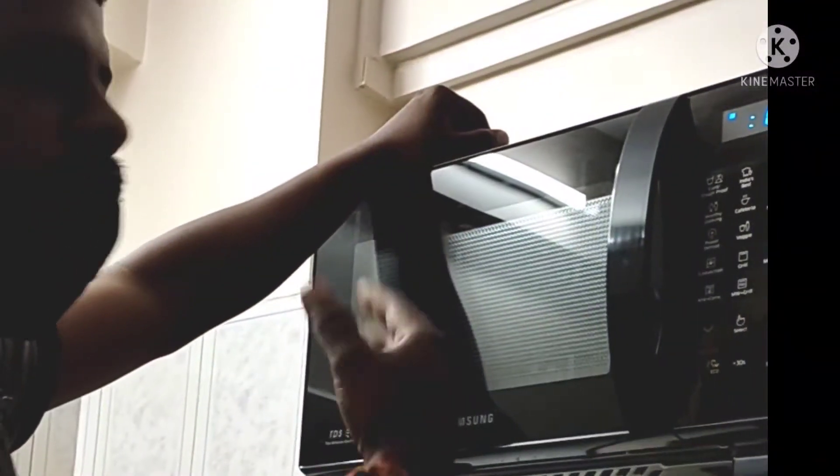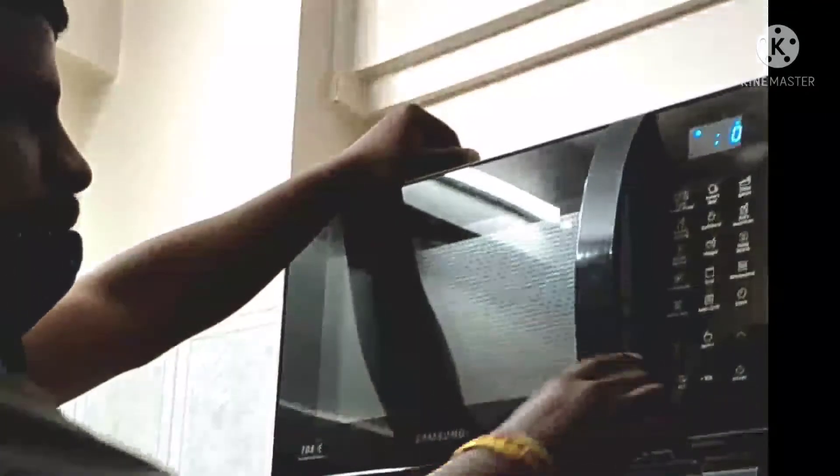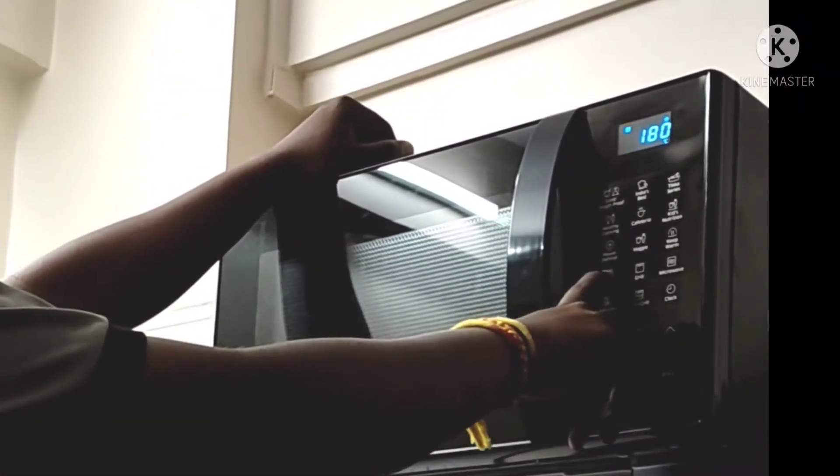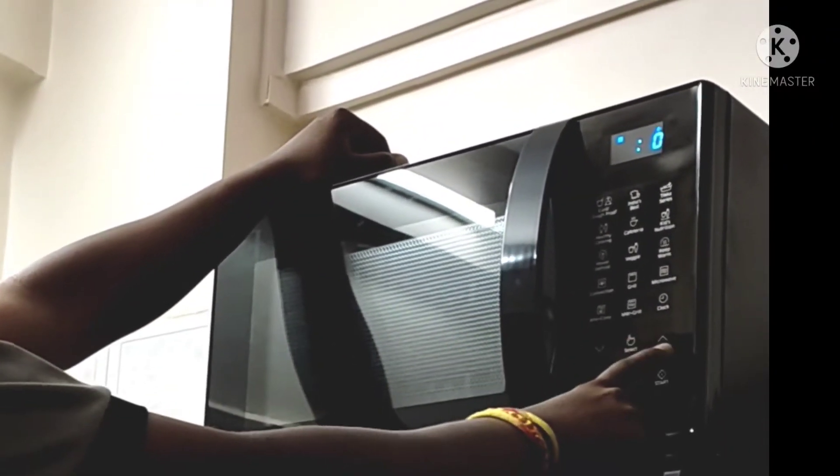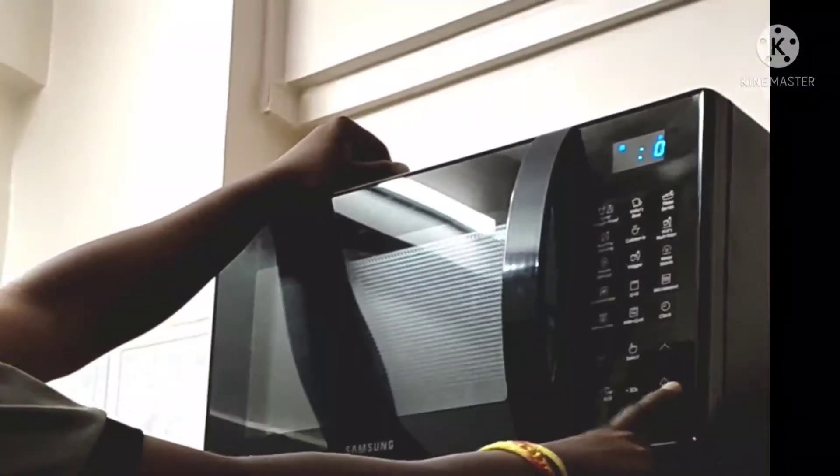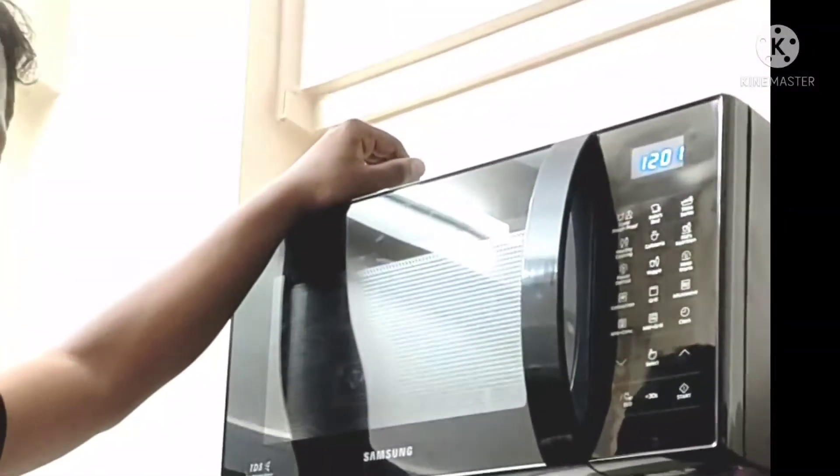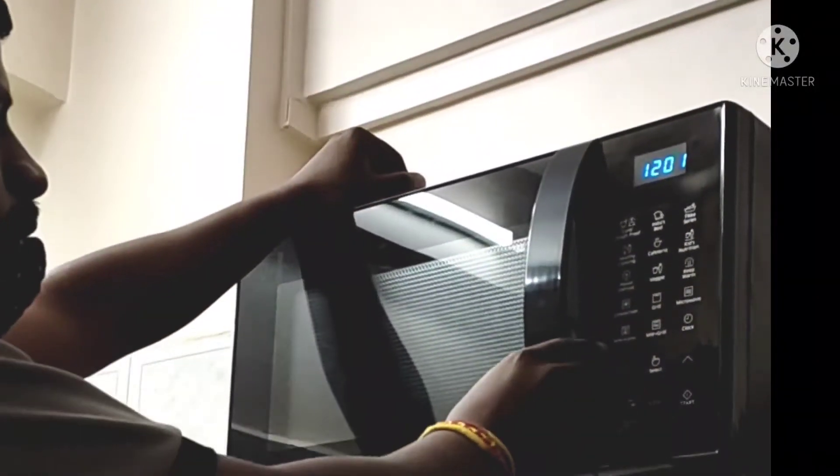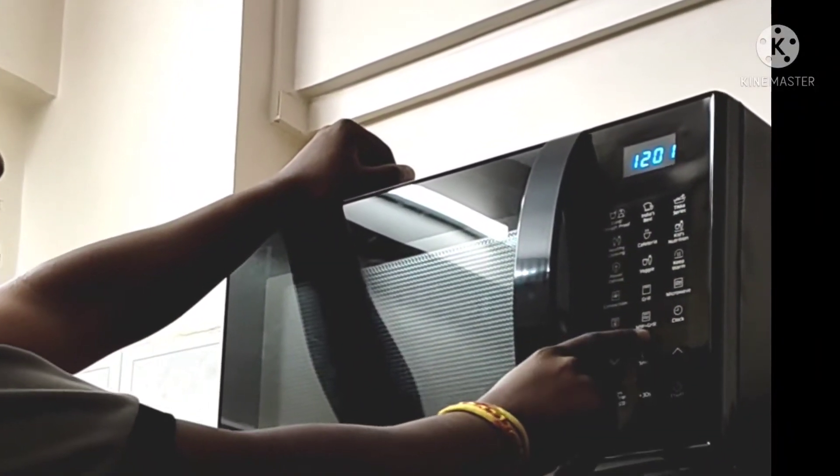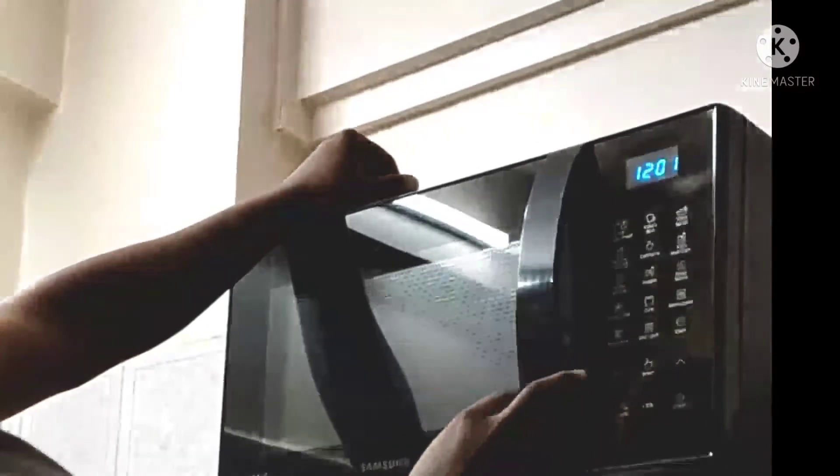To use convection, press the convection button. For convection, your pre-heating should be done. You can also use microwave convection and grill combination modes. You can use it to make a crispy pan.